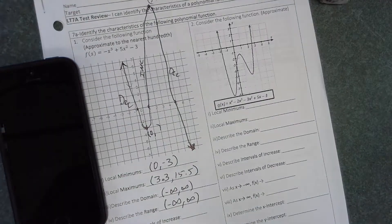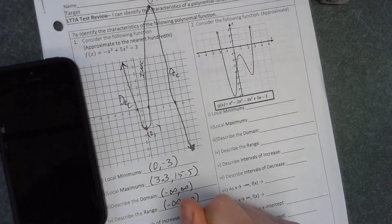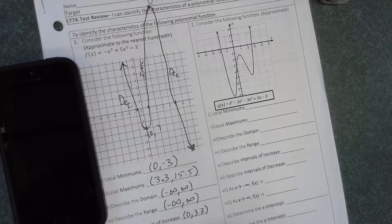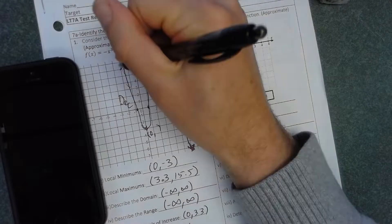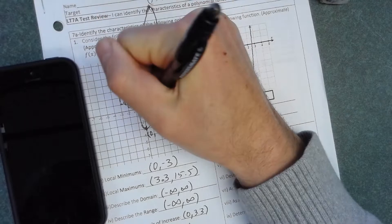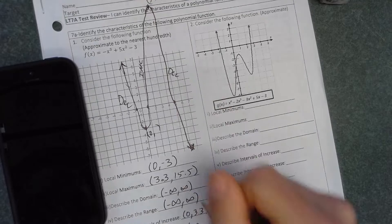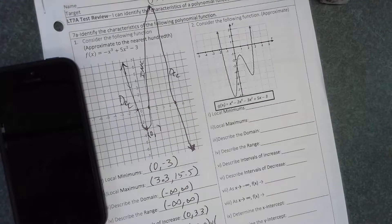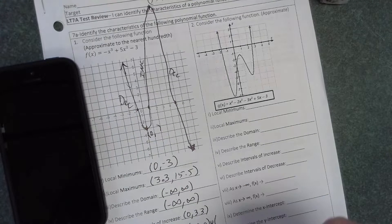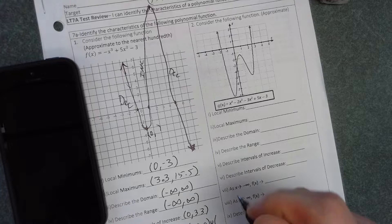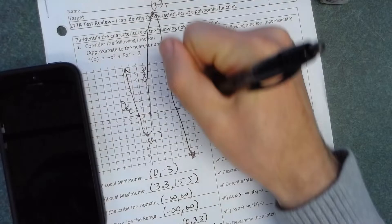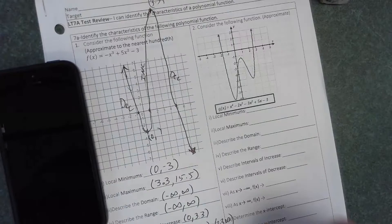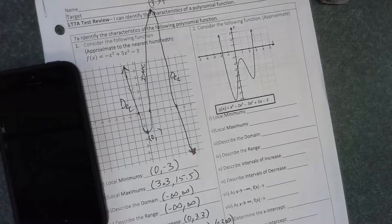It's decreasing from the left, from negative infinity, and it's going to decrease all the way to 0. I'm going to join it with a union just to say that there's also another part that's decreasing from 3.3 to the right forever to infinity. Keep thinking x values, left and right.